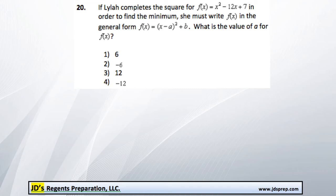This is problem number 20 from the August 2015 Algebra Regents exam. If Lila completes the square for this function here in order to find the minimum, she must write f(x) in this general form. What is the value of a? Let's go ahead and write out this equation and complete the square.